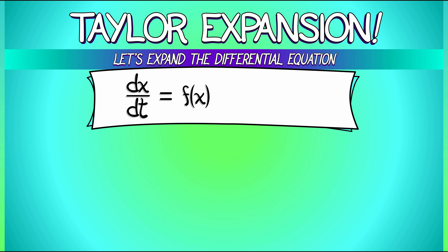Let's say that we've got an equilibrium at x equals a. What does that mean? That means that f of a must be equal to zero. Let's expand about that equilibrium. Let's expand the differential equation about that equilibrium.